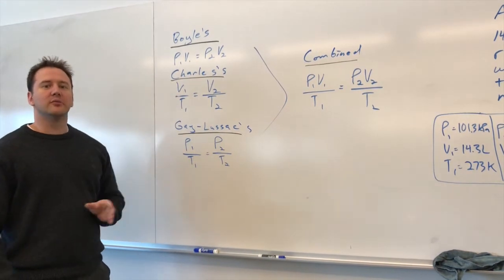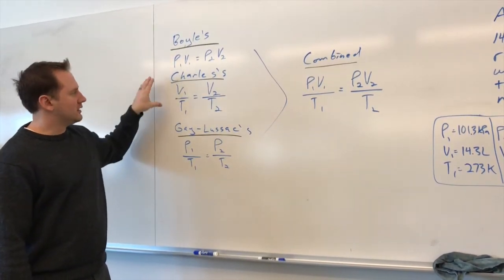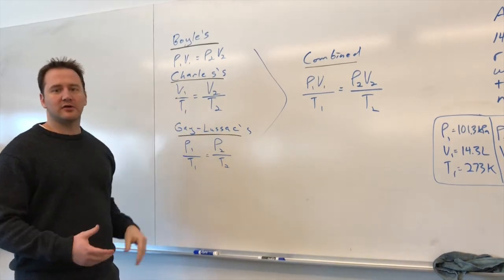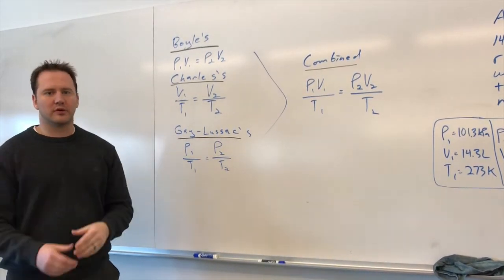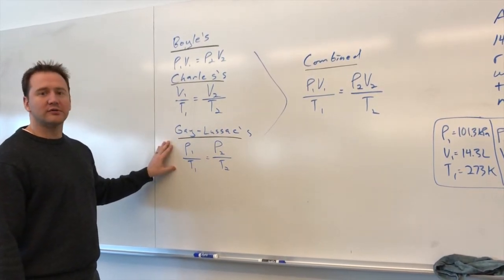Now, each one of these holds a variable constant. So in Boyle's Law, you have temperature as a constant. In Charles' Law, you have it against the constant pressure, like if you were doing it in a room where the air pressure outside isn't going to change. And then Gay-Lussac's Law, you're holding the volume constant.